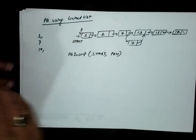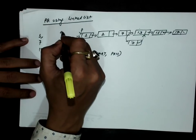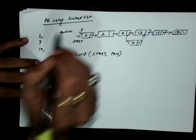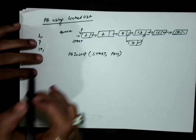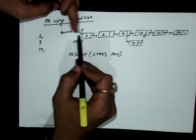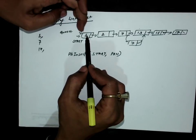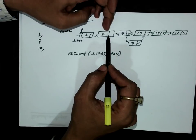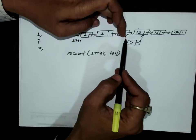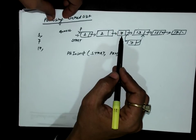For finding the position, I use a pointer P which keeps the address of the first node, and a pointer Q which is initially null. P is at the first node and Q is its predecessor. If P moves to the second node, Q will be at the first node. Q is always the predecessor of P.